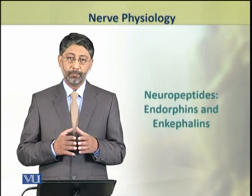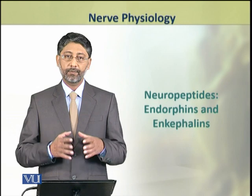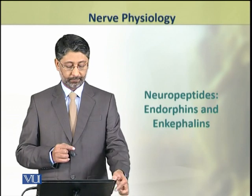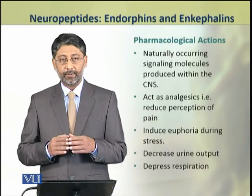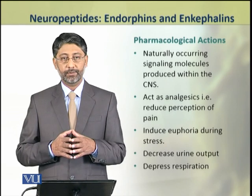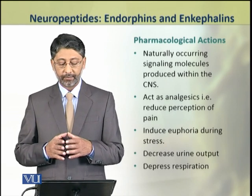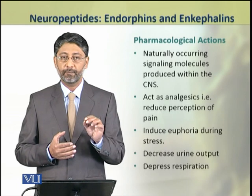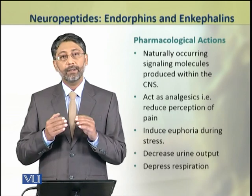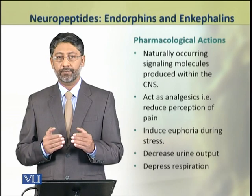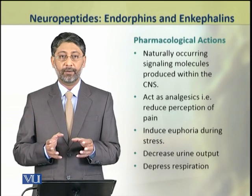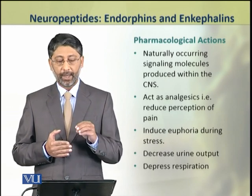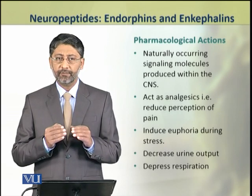Dear students, in this module we shall discuss in detail the neuropeptides, endorphins and enkephalins. These substances are naturally occurring signaling molecules which are produced in the central nervous system. They act as analgesics, i.e. they reduce the feeling of pain. They also induce euphoria during stress, i.e. the feeling of betterment in stress. They also decrease urine output and reduce the rate of respiration.